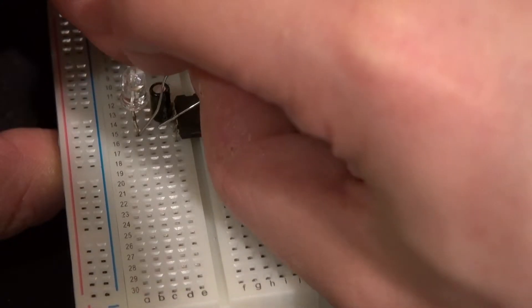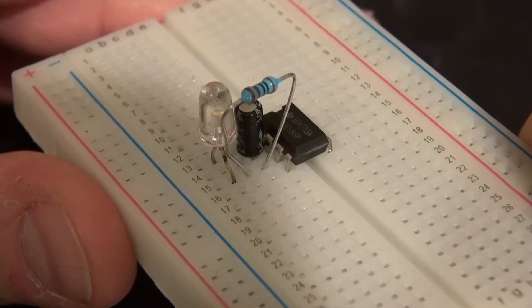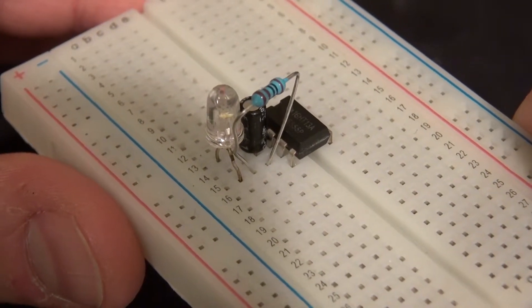Now take your 1k ohm resistor and put it between the anode of the LED and pin 3, just like that.